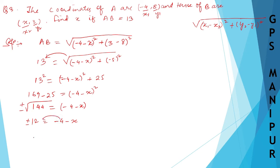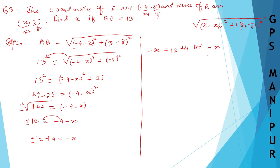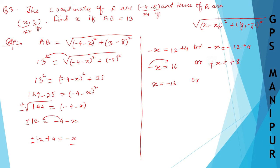Transfer -4 to the other side to get plus 4. So minus x equals plus or minus 12 plus 4. Taking +12: minus x = 12 + 4 = 16, so x = -16. Taking -12: minus x = -12 + 4 = -8, so minus cancels and x = 8. Therefore x = -16 or x = 8.